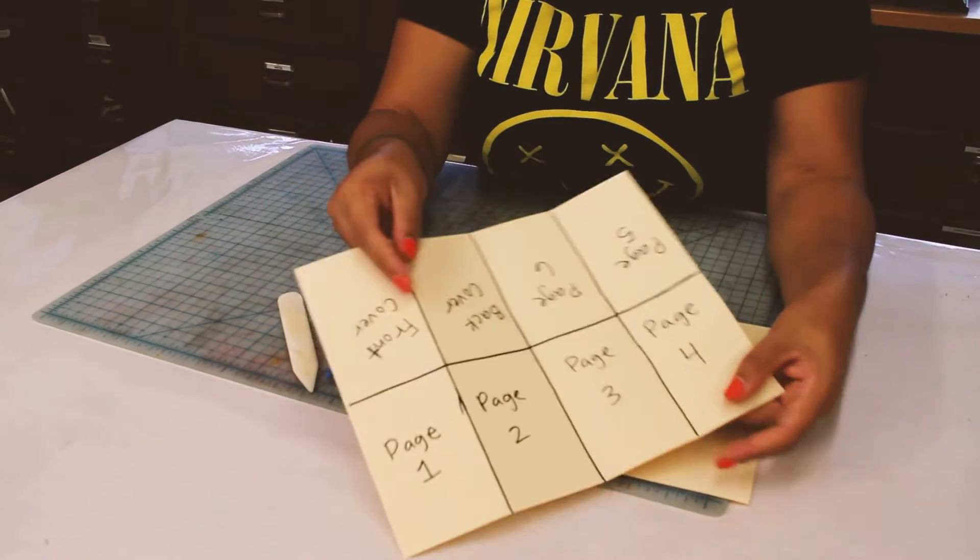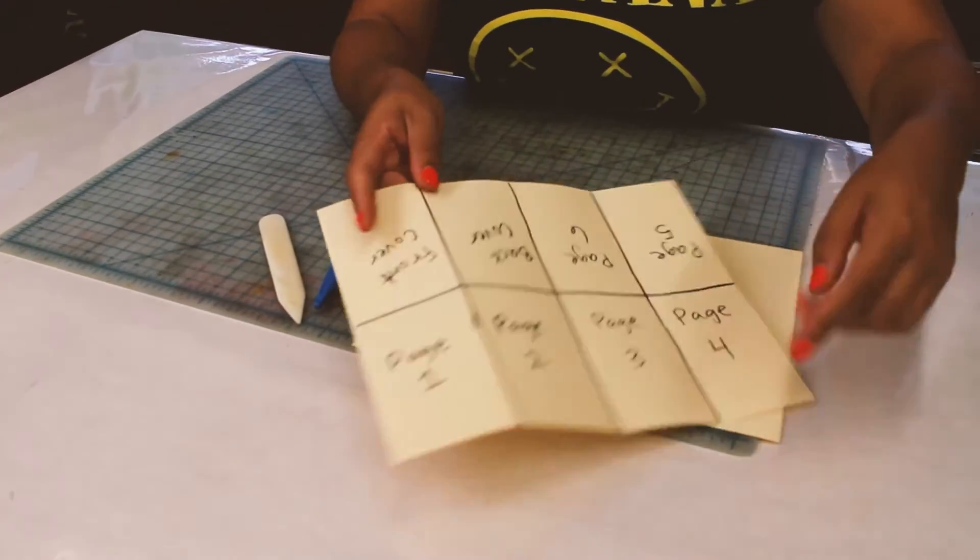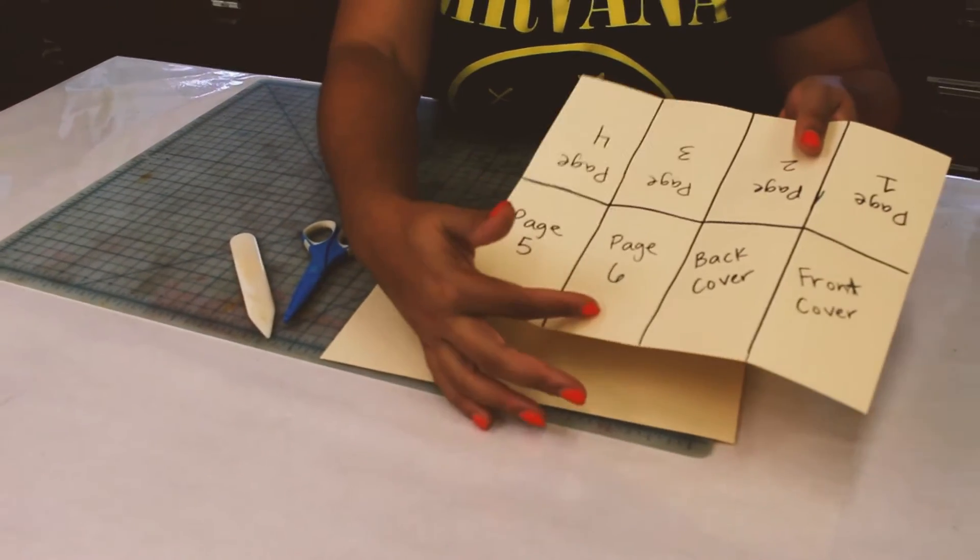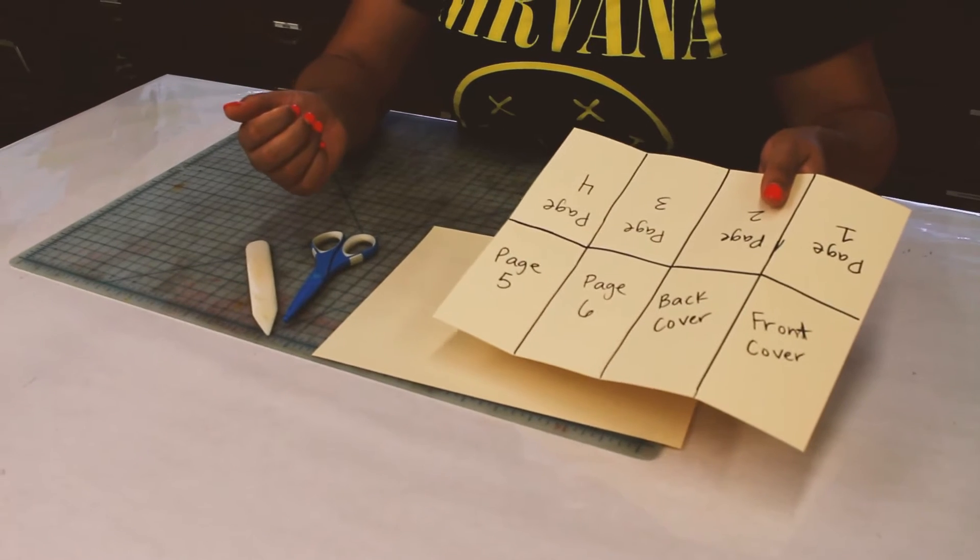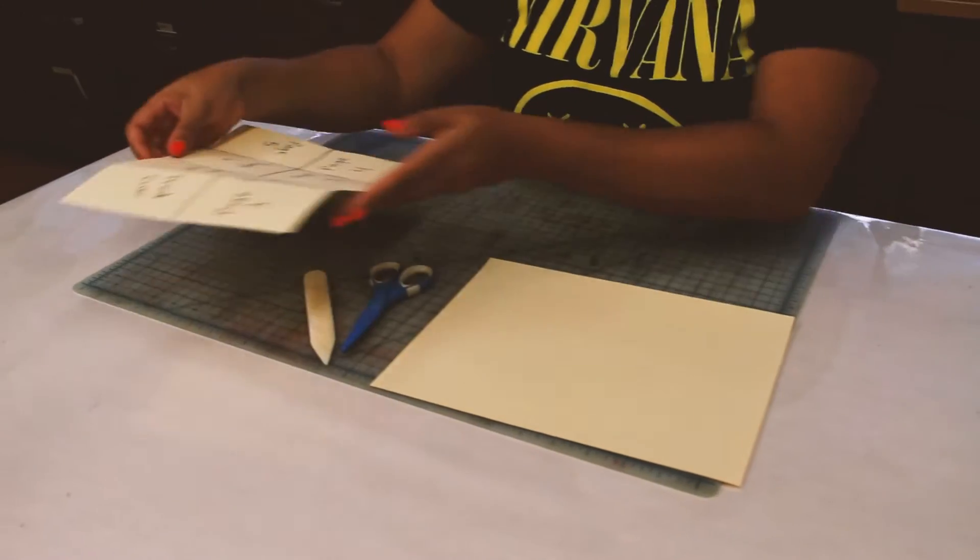and the pages start numbered one, two, three, four, five, and six. That'll be important for when we cut it and fold it into a little zine.